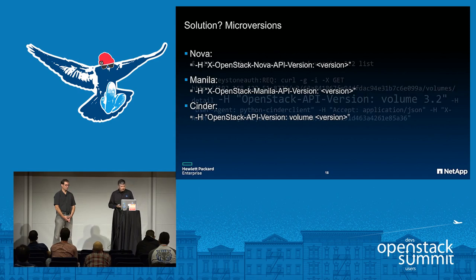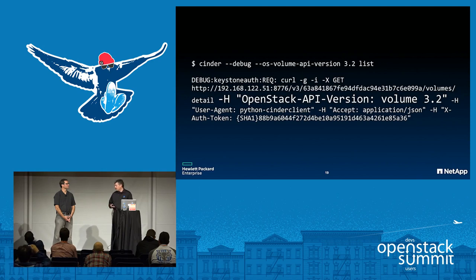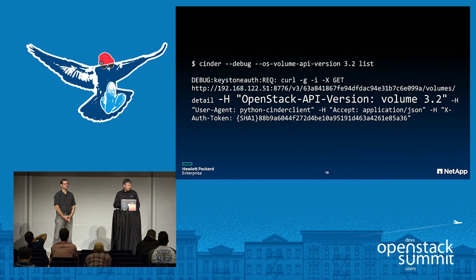With the debug switch on some clients including Cinder and Manila, it'll output the curl semantics for invoking a command. You can see here a GET call to Cinder v3, and in the header: OpenStack-API-Version asking for volume microversion 3.2.